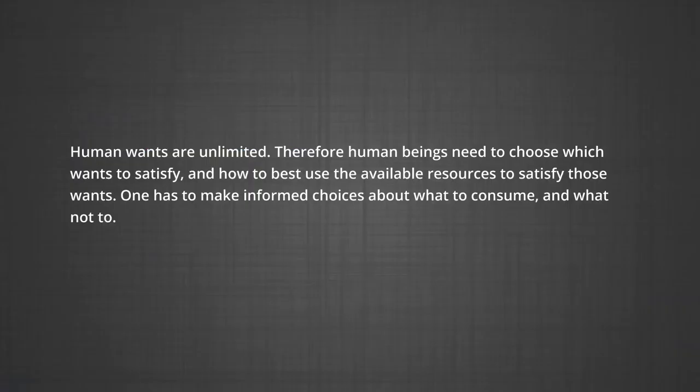The central problem of an economy is that human wants are unlimited. A good way to think about this is to list everything that you want — how long is that list? With the resources that one has, all the wants of an individual cannot be fulfilled at any given point of time. Therefore, human beings need to choose which wants to satisfy and how best to use the available resources to satisfy those wants. One has to make informed choices about what to consume and what not to consume. For example, if you have 100 rupees as pocket money every month, and you love to consume ice creams, chocolates, biscuits, how should you spend the 100 rupees such that you get the most out of your money?